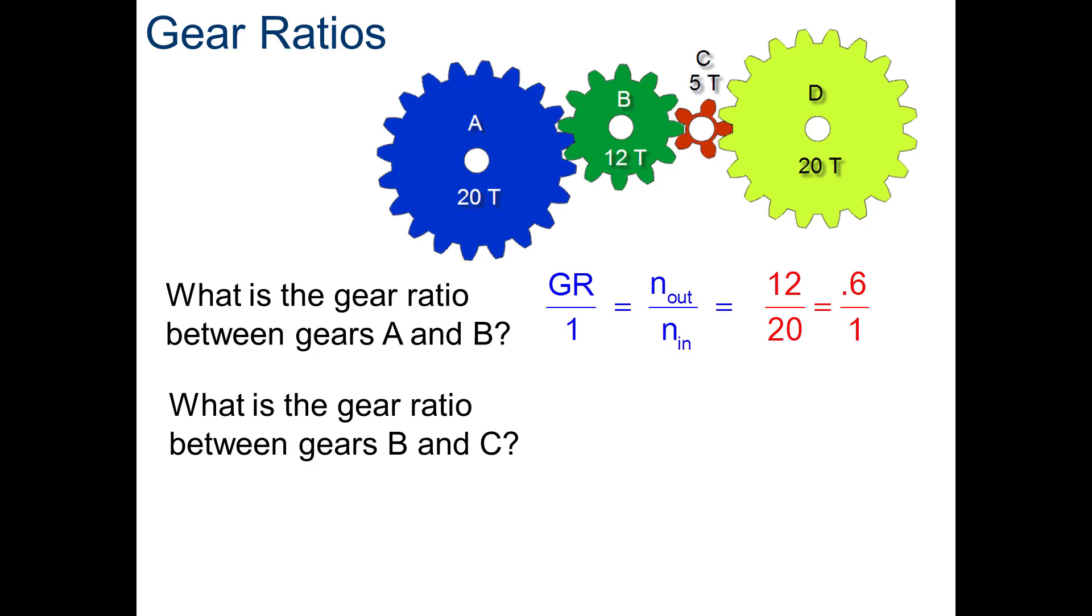Again, pause the video, calculate the gear ratio between B and C. Should have gotten 5 divided by 12 for a gear ratio of 0.42.